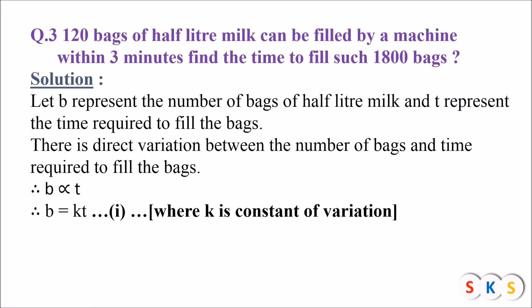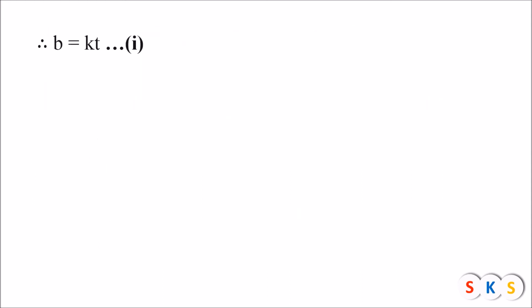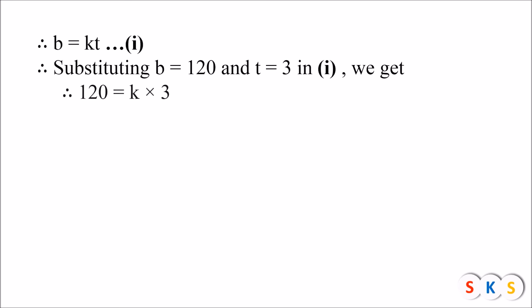b means number of bags = 120 and t means time = 3 minutes. Since 120 bags can be filled in 3 minutes, we have b = 120 and t = 3. Substituting in equation 1 — b = kt — we get 120 = k × 3, so k = 120 ÷ 3, giving k = 40.